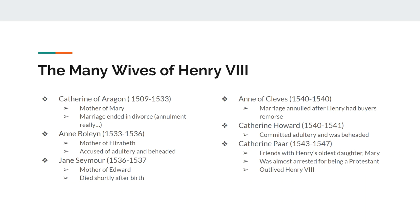When Anne Boleyn cannot produce a male heir, she's accused of adultery, arrested, and beheaded. So Henry has to find a new wife, and the new wife is Jane Seymour. Jane Seymour was friends with Anne Boleyn, and they are married from 1536 until 1537. Jane and Henry have a son named Edward, but Edward is very sickly. Jane is going to die shortly after she gives birth — less than a week later, due to complications from childbirth.